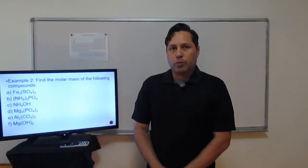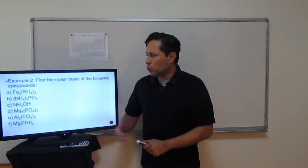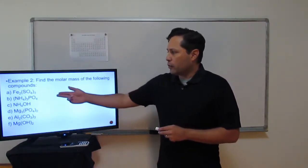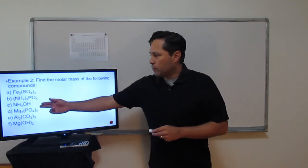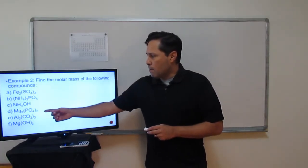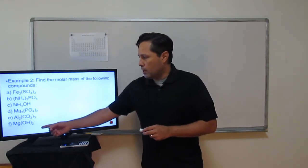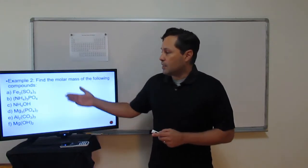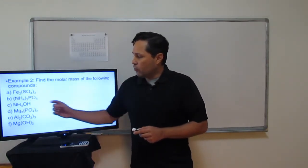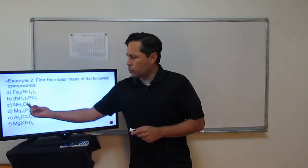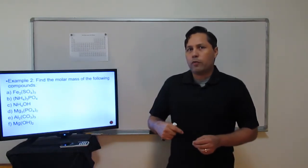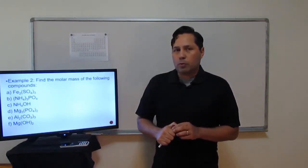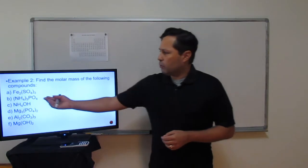Up next is example number two. In this example you have six different problems, A through F: iron 3 sulfate, ammonium phosphate, ammonium hydroxide, magnesium phosphate, aluminum carbonate, and magnesium hydroxide. What makes these problems different is that they all have parentheses, which increases the difficulty a little bit. Let's talk about how to deal with the parentheses.